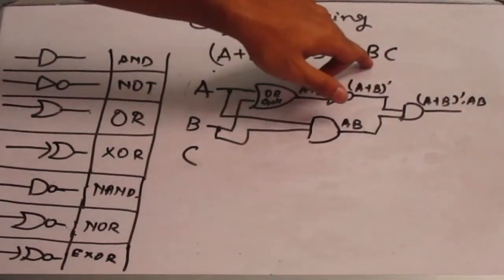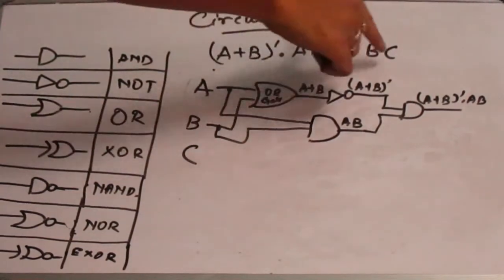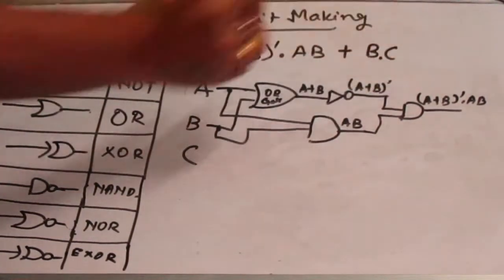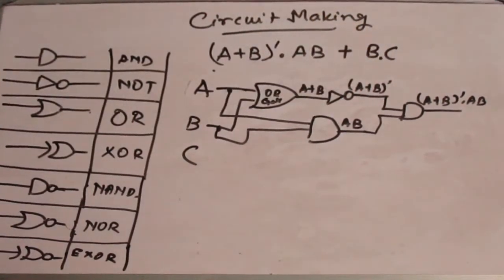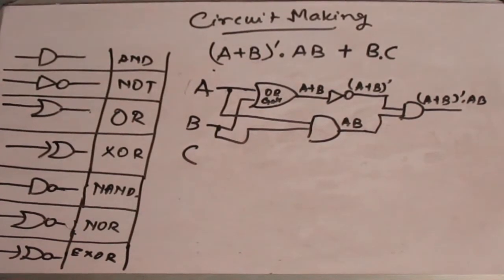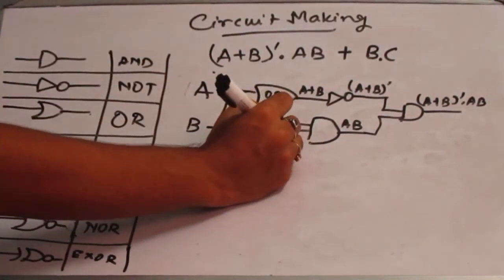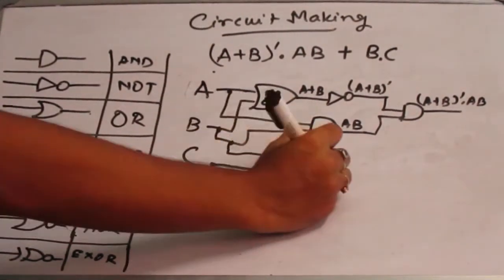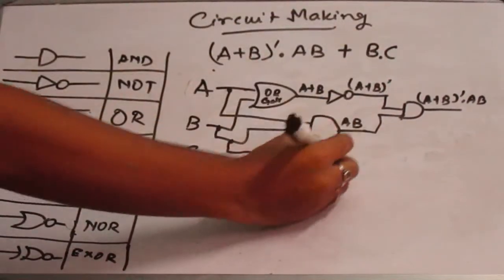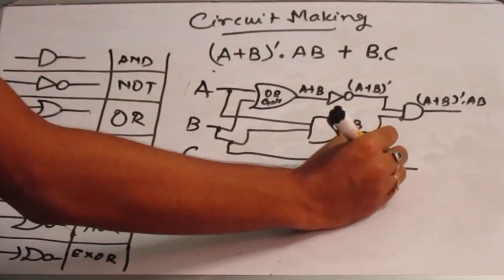Now we have to find again the circuit diagram for this expression. So for this, A dot B — when nothing is given, two variables written side by side means dot of two variables, which means you have to use an AND gate. So for this, take part of B from here and C. Since it is AND, pass it through the AND gate. That will give you BC.